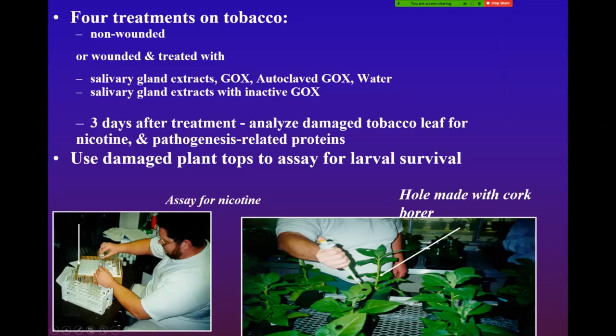We wounded these plants using a cork borer to punch holes, to mimic herbivory — that was one of many methods used. Then we painted on oral extracts, saliva, or purified glucose oxidase. Autoclaved means I heat-destroyed the enzyme so it was no longer functional. Three days later I analyzed the tobacco leaf for nicotine and pathogenesis-related proteins — to see if the systemic acquired resistance pathway or salicylic acid pathway was being turned on.